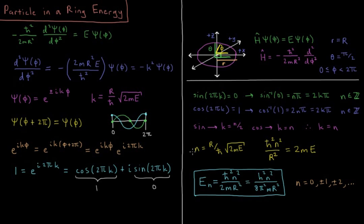We have n, some integer, equals r over ℏ times the square root of 2mE. So squaring both sides and multiplying by ℏ over r, we have ℏ²n²/r² equals 2mE. Or finally, that our energy as a function of the quantum number n is equal to ℏ²n² over 2 times the mass of the particle times the radius of the ring squared. Which, if we take this in terms of h instead of ℏ, would also equal h²n²/8π²mr². Where n can now equal 0, ±1, ±2, etc. Any integer is a valid solution of this equation.